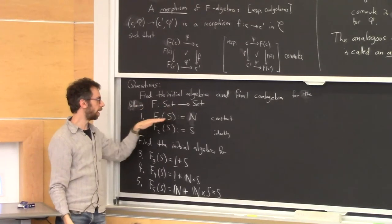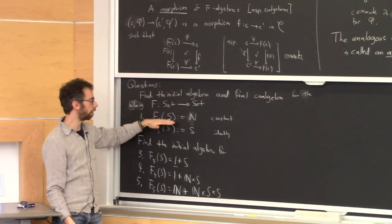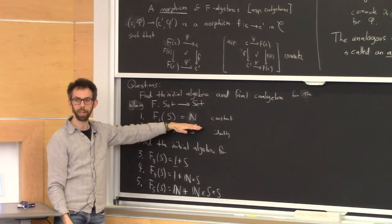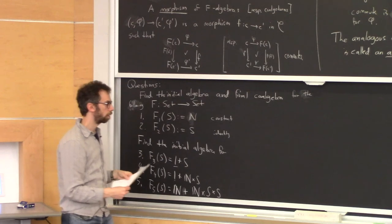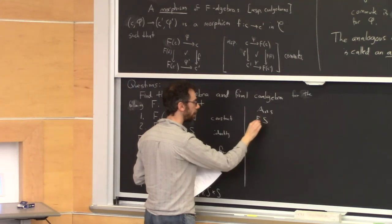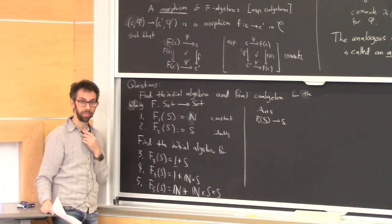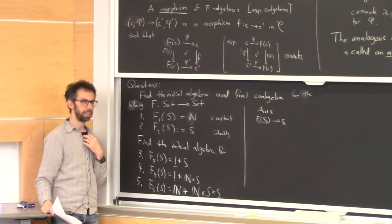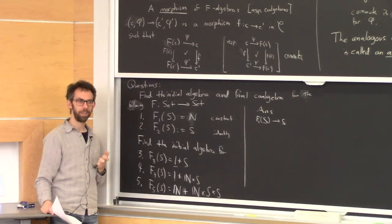Here's a functor from Set to Set. F1 of S is the naturals for any set S, and F1 of any morphism is the identity on the naturals—it's the constant functor. What is the initial algebra? The initial algebra has to be some set S and a map from F1 of S to S, and it has to be initial so that any other algebra receives a map from it.